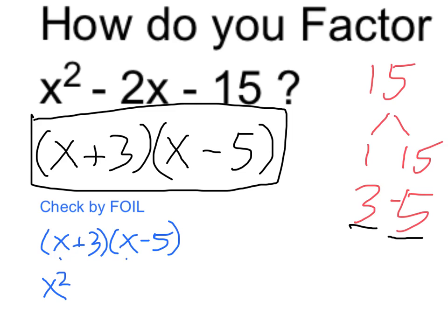And then if I multiply x by minus 5, that's minus 5x. The 3 times x gives me plus 3x. And 3 times negative 5 gives me minus 15, as I expected.